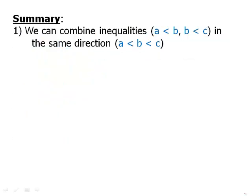In summary, we can combine inequalities if the common term is less than 1 and greater than the other. We can combine everything in the same direction. So, a is less than b, b is less than c. We can combine that into a is less than b, less than c, which tells us directly that a is less than c.